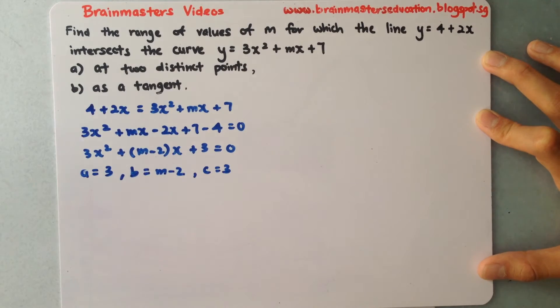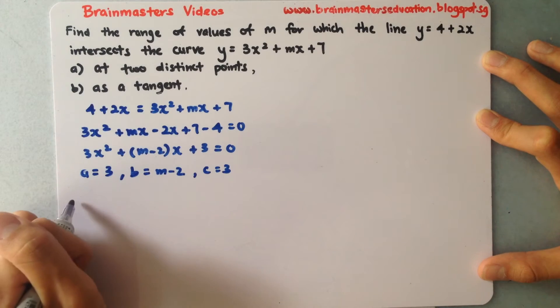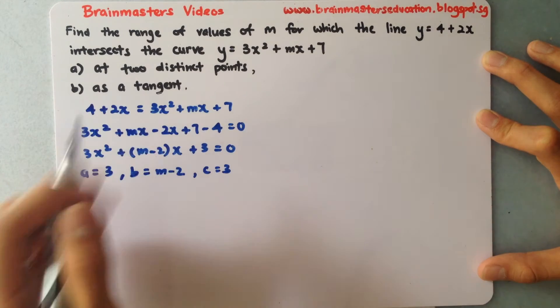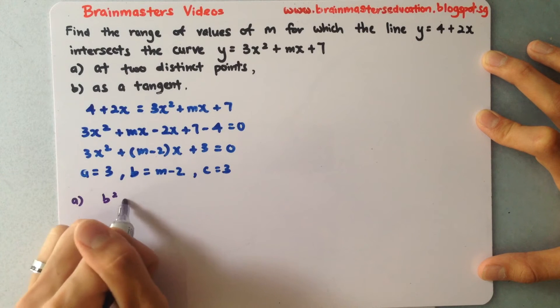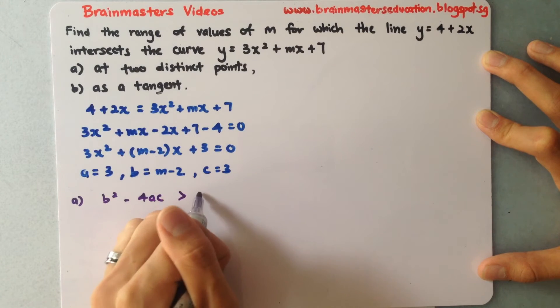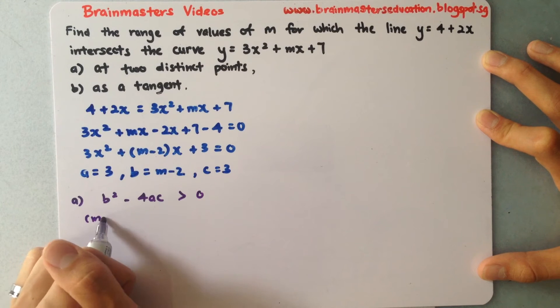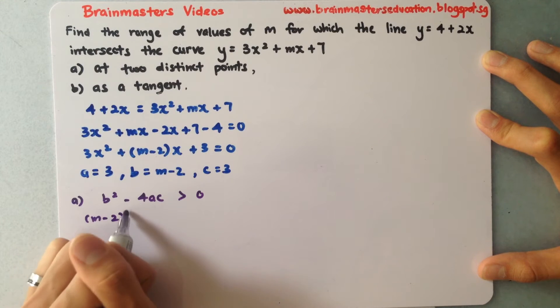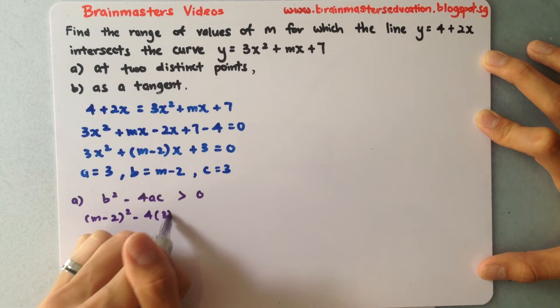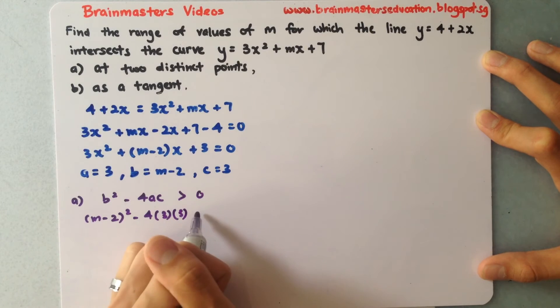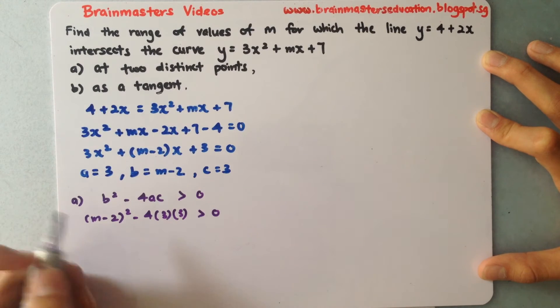For part a, two distinct points means b² - 4ac > 0. Substituting the values: (m - 2)² - 4(3)(3) > 0.